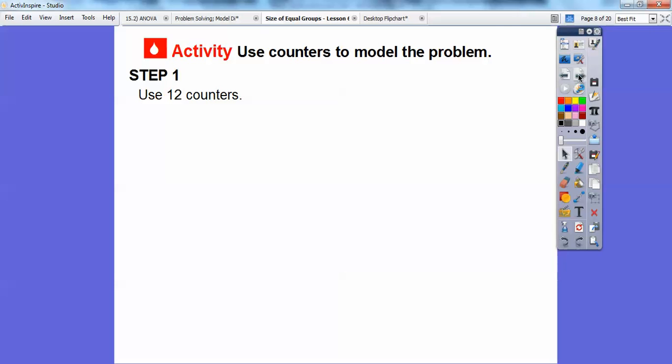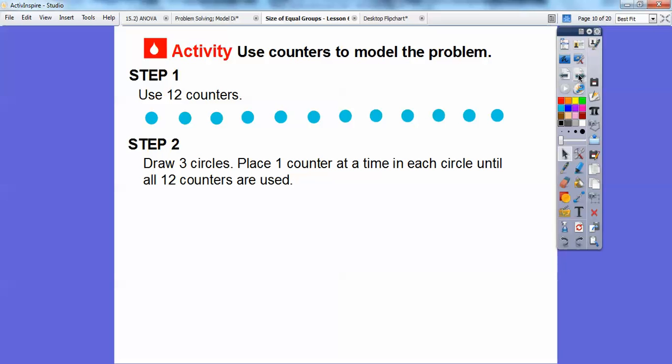So let's use 12 counters here, so there's my 12 counters right there and I think I counted 12 when I did this. Alright and then step two, we're going to draw three circles to talk about the three baskets and we're going to place one counter at a time in each circle until all counters are used.